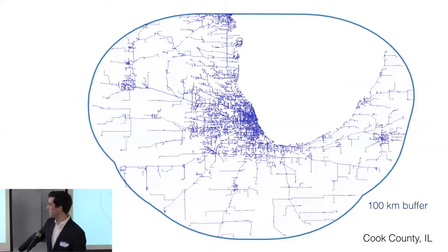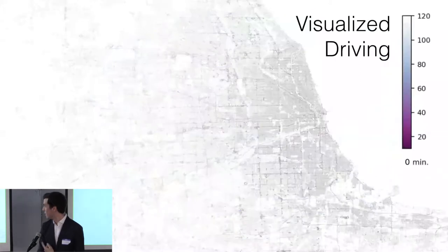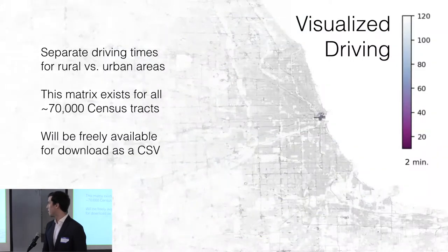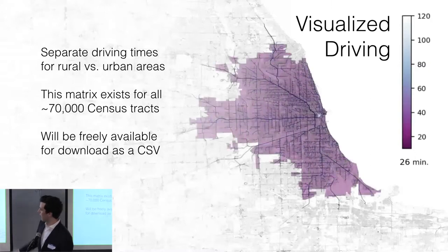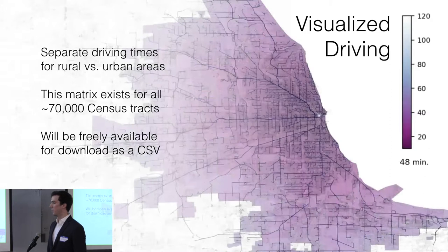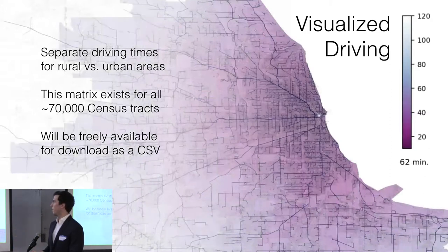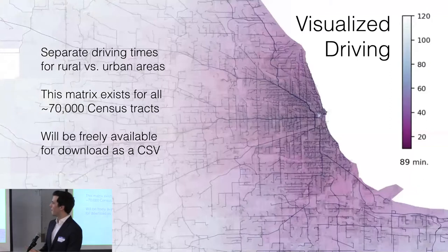The result, for every single tract in the country, is about 130 million OD pairs. For example, this is Chicago — starting from some origin in the Loop, you're routing to all census tracts within 100 kilometers. We also separate urban and rural driving times, since people in rural areas drive much faster. The final result is one giant CSV — a huge OD matrix — which we will make freely available.